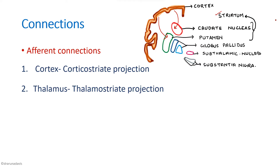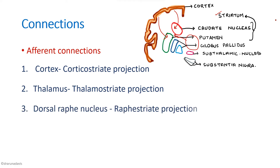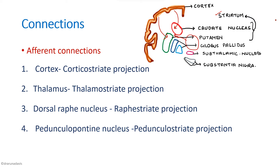Next, from the thalamus to the striatum, it is called the thalamostriate projection. And we have got from the dorsal raphe nucleus, we have got the raphaestriate projection. And from the pedunculopontine nucleus, we have got the pedunculostriate projection. So basically, if you remember, the two important ones are from the cortex and the thalamus, and also it has got inputs from the dorsal raphe nucleus and the pedunculopontine nucleus.